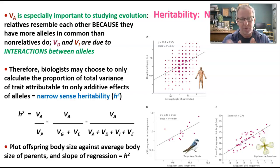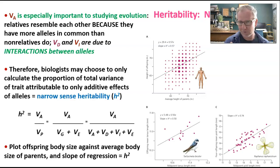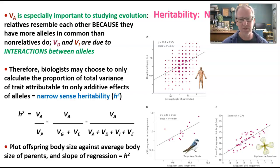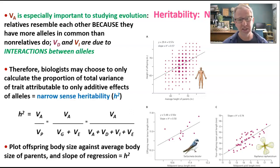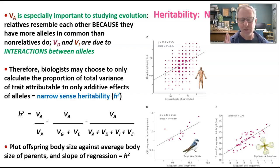Narrow-sense heritability expanded: h² = V_A divided by (V_A + V_D + V_I + V_E). Narrow-sense heritability is what really determines the effect of genetics on the evolution of traits in a population. Measuring it tells us to what degree additive alleles have an effect on a particular phenotype.